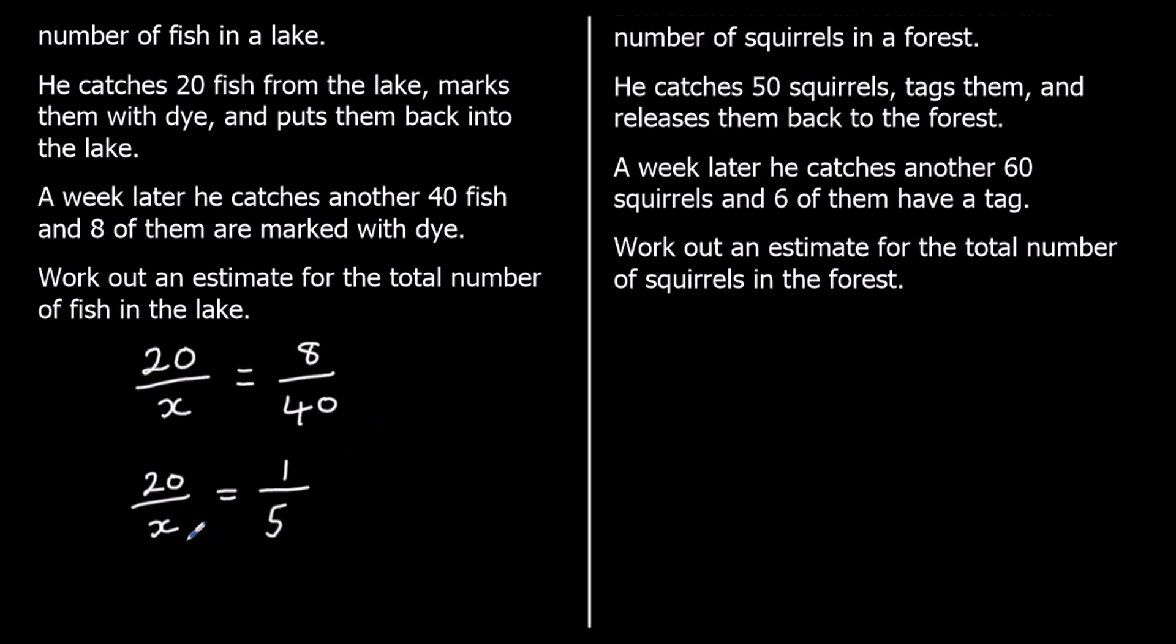So 20 over x is equivalent to 1 fifth. So to get from 1 to 20, you multiply by 20. And whatever you multiply the top by, you multiply the bottom by the same thing.